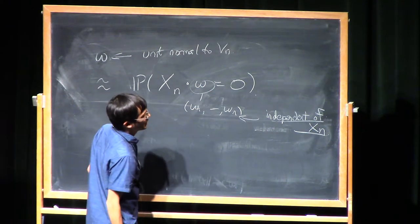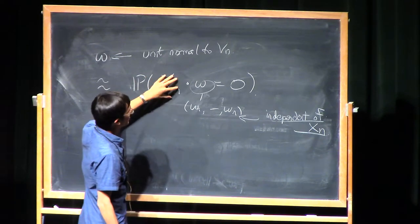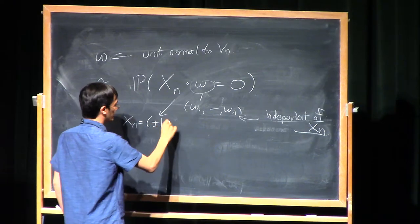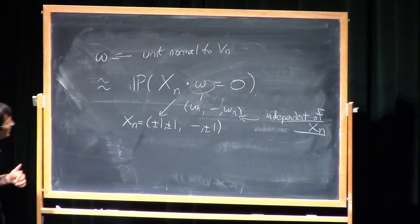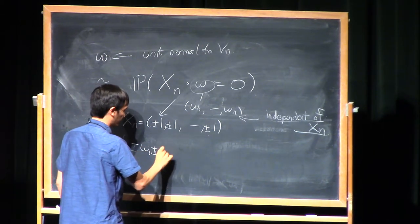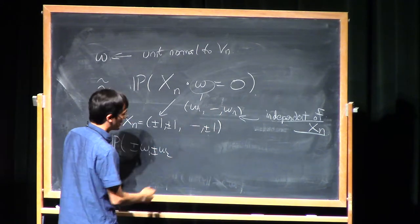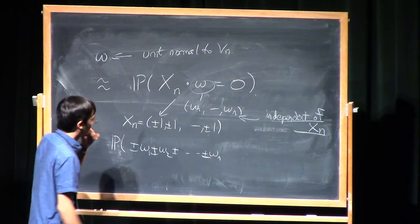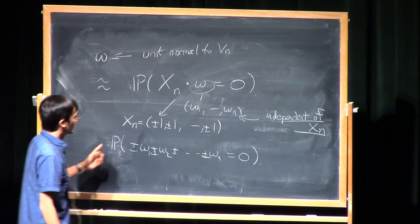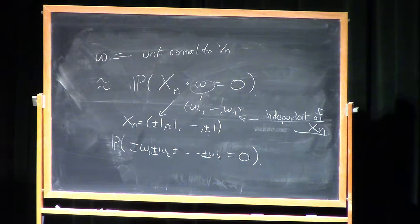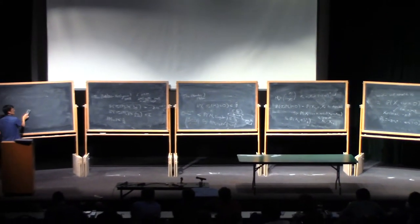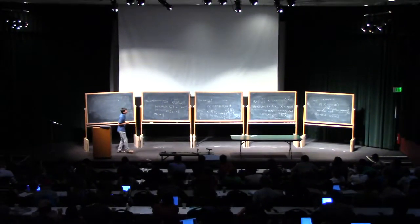Since x_N is independent of omega, what we have is a random combination: you generate omega_1 to omega_N in some complicated fashion, and then take a random walk with the signs of x_N. We're asking for the probability that this random walk returns to zero. The study of when random walks return to zero has been studied for a long time under what's called Littlewood-Offord theory.